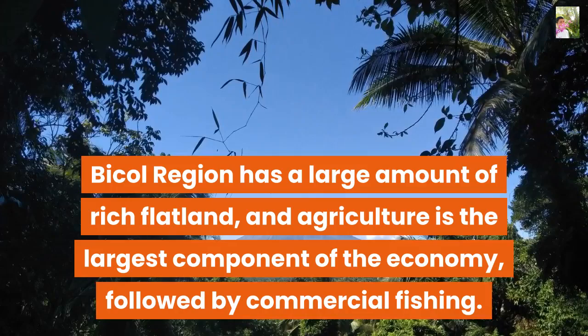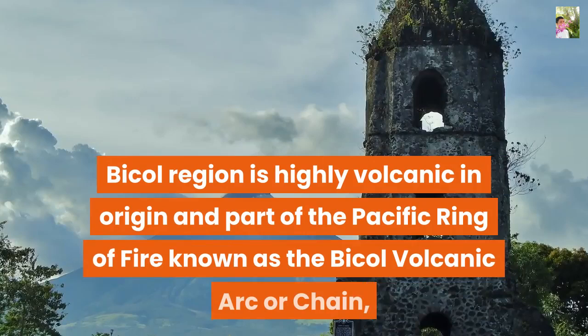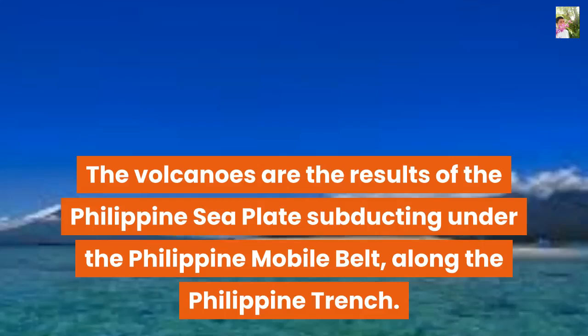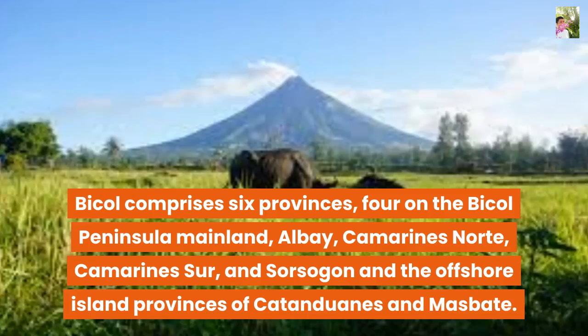Bicol Region is highly volcanic in origin and part of the Pacific Ring of Fire, known as the Bicol Volcanic Arc or chain. The volcanoes are the results of the Philippine Sea Plate subducting under the Philippine Mobile Belt along the Philippine Trench. Bicol comprises six provinces — four on the Bicol Peninsula mainland: Albay, Camarines Norte, Camarines Sur, and Sorsogon — and the offshore island provinces of Catanduanes and Masbate.